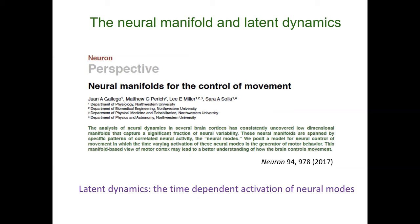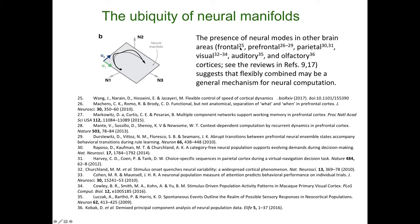We argued this specifically for movement control in a paper published with collaborators Juan Gallego, Matthew Perich, and Lee Miller — all at Northwestern at the time. Juan Gallego is now at Imperial College and Matthew Perich is doing a postdoc with Kanaka Rajan in New York; Lee Miller is my experimental collaborator at Northwestern. We argue that these latent dynamics — the time-dependent activity of the neural modes — are the building blocks of how the brain works.